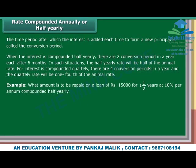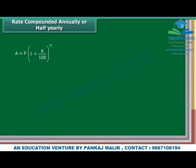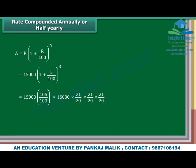Example: What amount is to be repaid on a loan of Rs. 15,000 in one and a half years at 10% per annum compounded half yearly? Solution: There are three half years in one and a half years, so compounding has to be done three times. Rate of interest equals half of 10%, which is 5% half yearly. A equals P into (1 plus R upon 100) raised to the power N, equals 15,000 into (1 plus 5 upon 100) raised to 3, equals 15,000 into (105 upon 100) cubed, equals 15,000 into (21 upon 20) cubed, which equals Rs. 17,364.37.